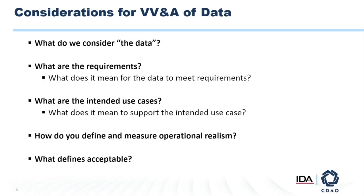So what are some practical considerations? In the context of an artificial intelligence model, what we consider the data might be broader than in a more traditional context. Some things that we need to do VV&A might extend beyond what we think of as a traditional definition of the data. What are the requirements? This is an interesting one because AI is developed and tested in an iterative fashion — it should be developed and tested in an iterative fashion.